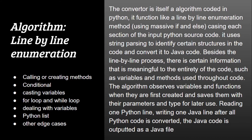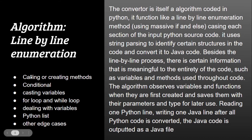The special structures of the Python source code that are handled include: calling and creating methods, conditionals (if and else statements), casting variables, for loops and while loops, creation and use of variables, Python lists, and other edge cases commonly used in Python.